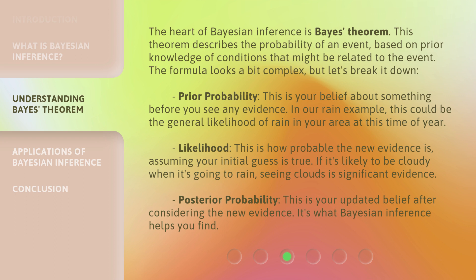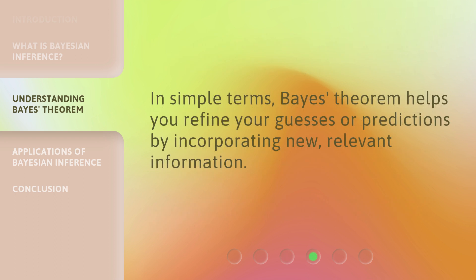Likelihood: this is how probable the new evidence is, assuming your initial guess is true. If it's likely to be cloudy when it's going to rain, seeing clouds is significant evidence. Posterior probability: this is your updated belief after considering the new evidence — it's what Bayesian Inference helps you find. In simple terms, Bayes' theorem helps you refine your guesses or predictions by incorporating new, relevant information.